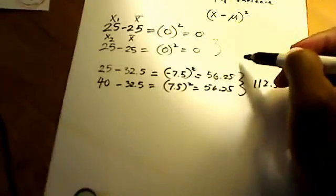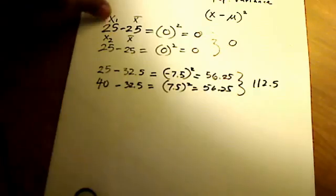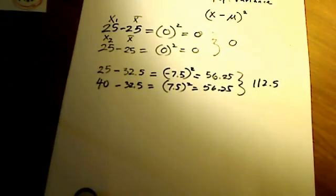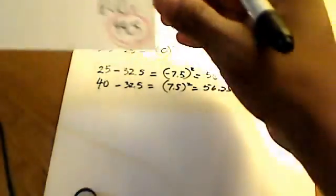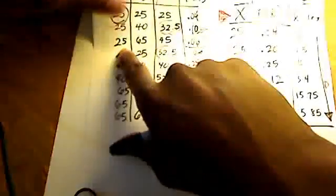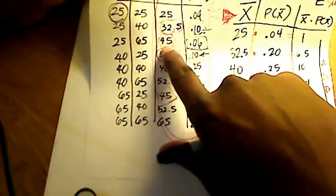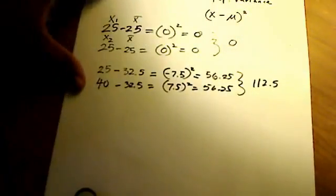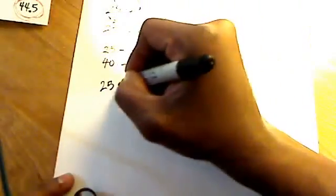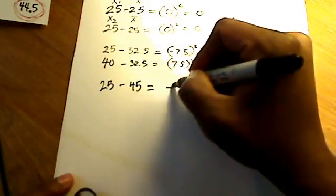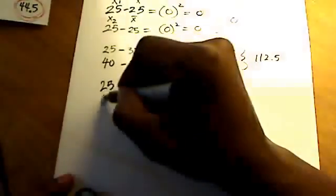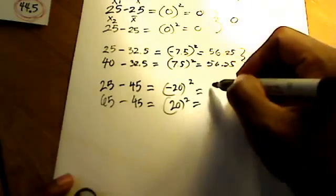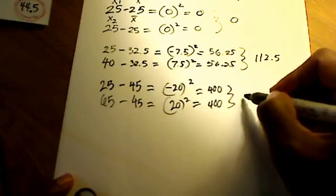Since there were two of them for this second case, I'm just going to add them up. I'm going to add these two values up and come up with 112.5. Let me show you one more example, this third case. It's 25 minus its mean which is 45, squared, and I'm also going to do 65 minus 45 squared. So 25 minus 45 is negative 20 squared, and 65 minus 45 is positive 20 squared. In each case, it comes out to be 400, and when I add them up, I get 800.